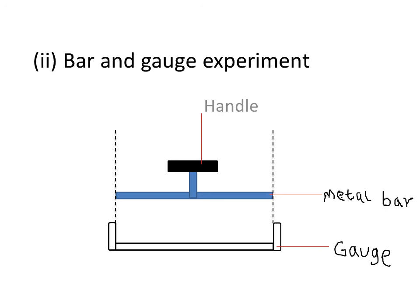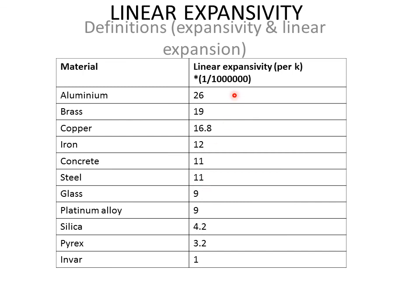We also look at linear expansivity. The word linear means straight or moving in a straight line. Expansivity comes from the verb to expand, meaning to increase in size. Expansivity is the tendency of a material to increase in size. Linear expansivity is the ability of a material to increase in size when heated.